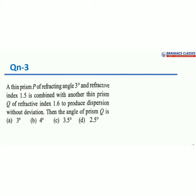We'll go to one more question related to prisms. A thin prism P of refracting angle 3 degrees and refractive index 1.5 is combined with another prism Q of refractive index 1.6 to produce dispersion without deviation. Find the angle of prism Q. As with previous questions, the device is a prism. The prism angle, apex angle, and refracting angle all refer to the same thing.